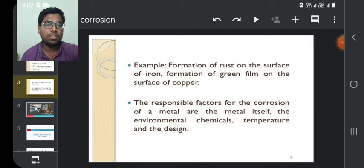Examples include formation of rust on the surface of iron and formation of green film on the surface of copper. The responsible factors for the corrosion of a metal are the metal itself, the environmental chemicals, temperature, and the design.